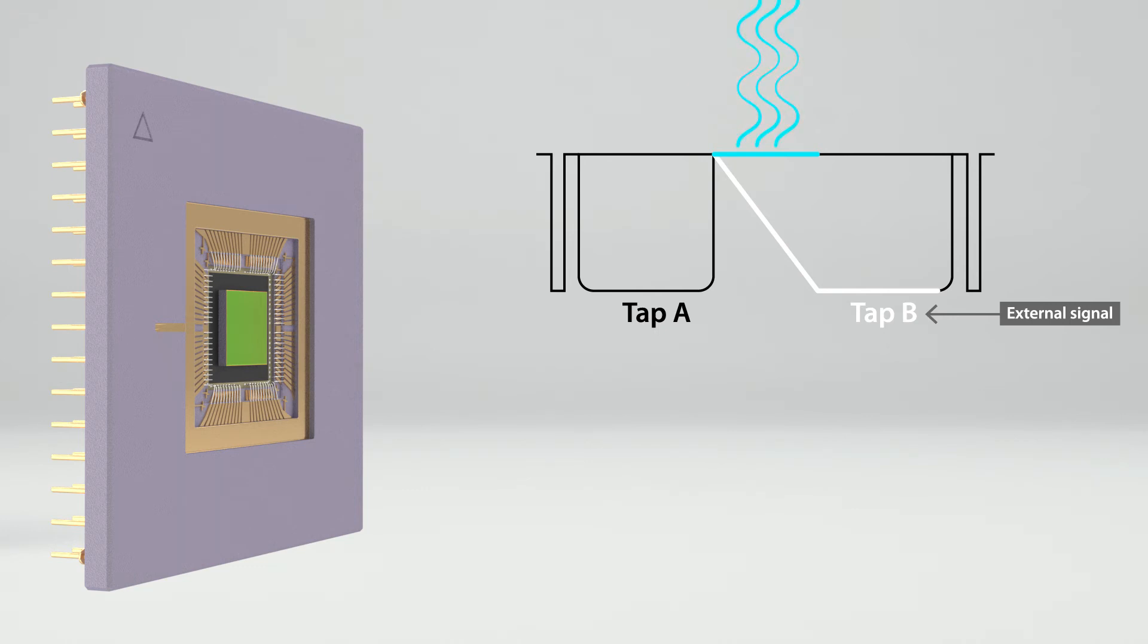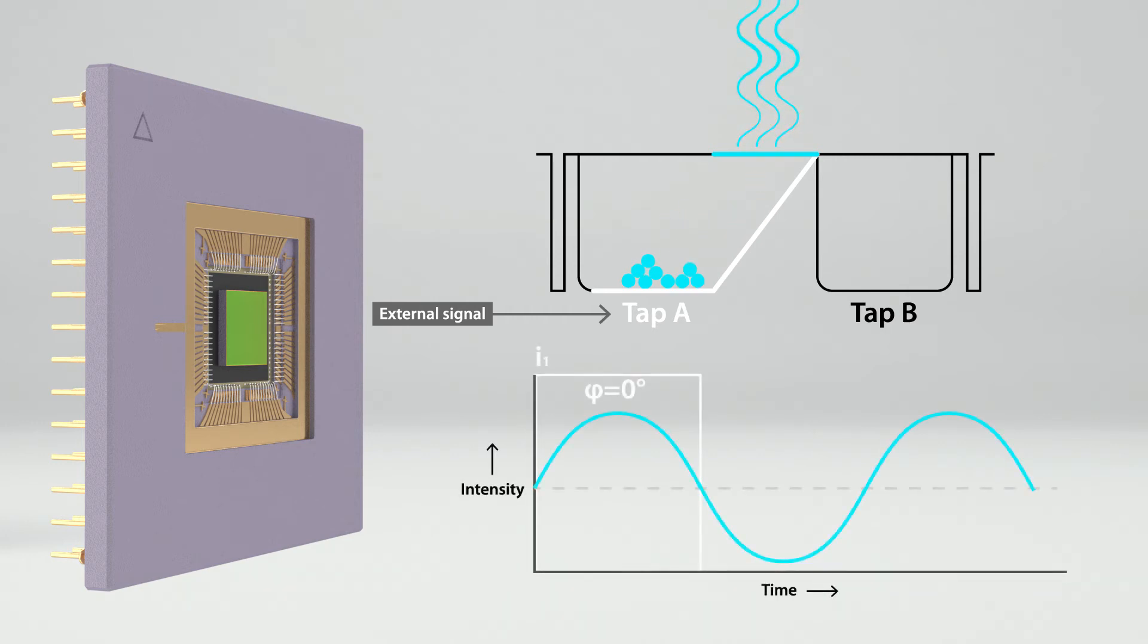By modulating the excitation light and the image sensor at the same frequency, specific phase shifts can be measured in each pixel. At phase 0, tap A is active, all charge carriers are collected in charge bucket A. This is image I1.